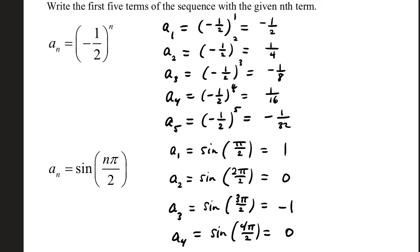For each of these problems below, we're going to write the first five terms of the sequence with the given nth term. The subscript of a is going to be a natural number called counting numbers like 1, 2, 3, 4, and so on.